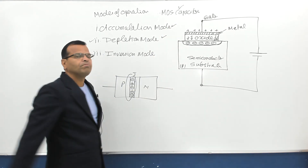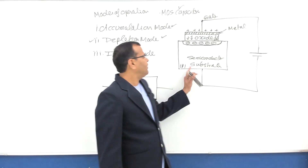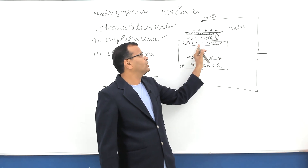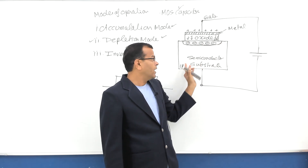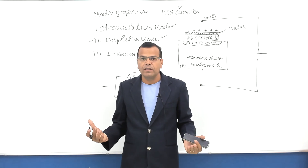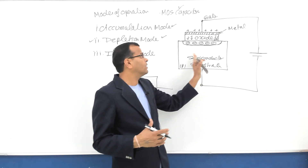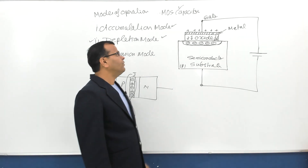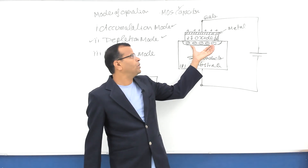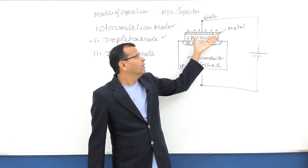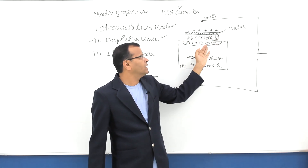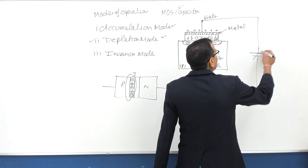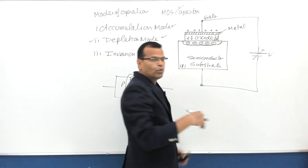For an N-type substrate the polarity would be reversed, so that region becomes free of electrons, leaving positive bound charges of the impurity. Otherwise the modes of operation are the same — only the polarity and type of substrate change. In depletion mode, there is a depletion layer under the oxide layer below the gate region in the semiconductor. Now if we increase this voltage further, something additional happens.